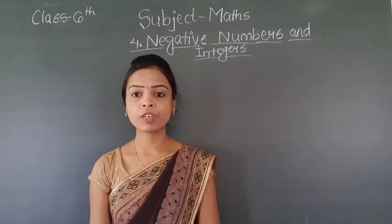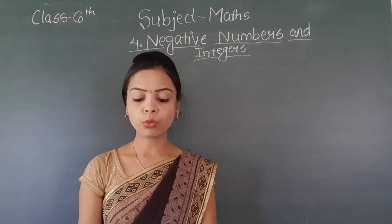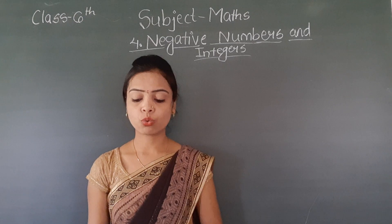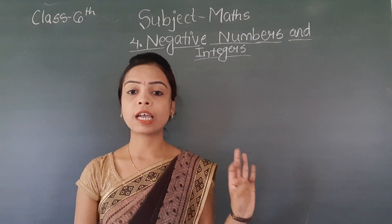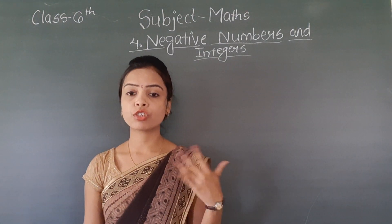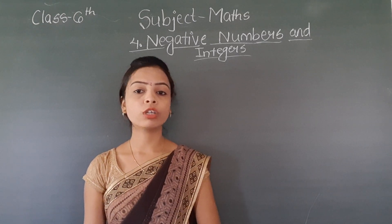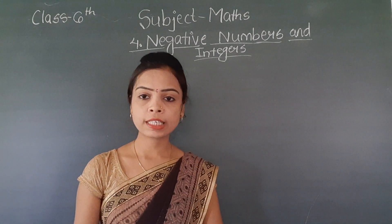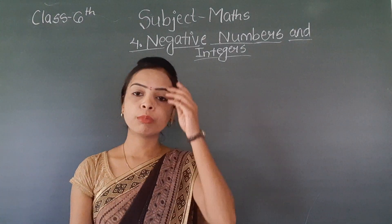In the previous lecture, we studied about negative numbers and what integers are. We also studied about successors and predecessors, comparison of negative and positive integers — which one is greater, which one is smaller — and representation of them on the number line. We also solved some questions of exercise 4A, up to question number 4.